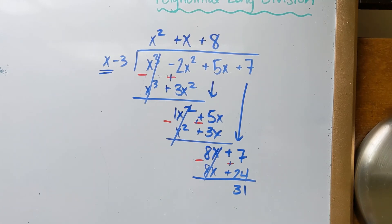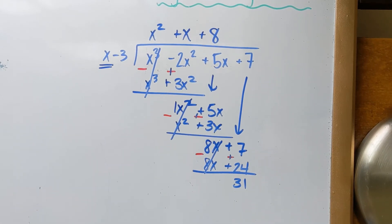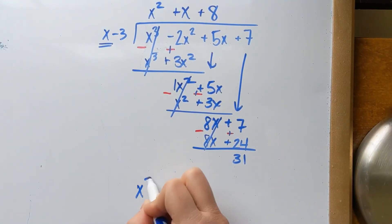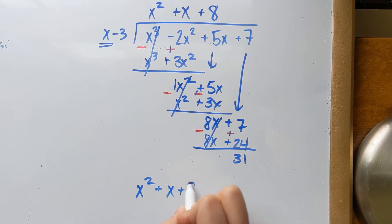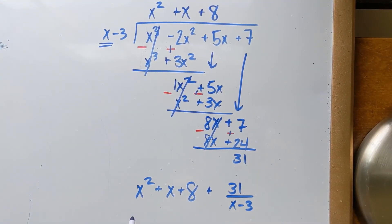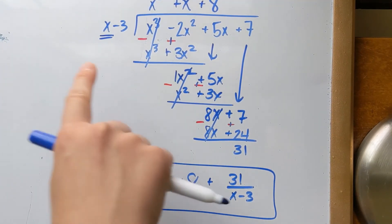Now we didn't have a remainder in the previous problem. We do for this one. For the answer, you take the quotient, which is up here, x squared plus x plus 8. Just like we did for the last one. But now since there's a remainder, remember what I said about the problem where we had 3 eighths. You take this and you put it out of whatever you are dividing by, x minus 3. And that is how you properly write that remainder. It goes over what you divided by.